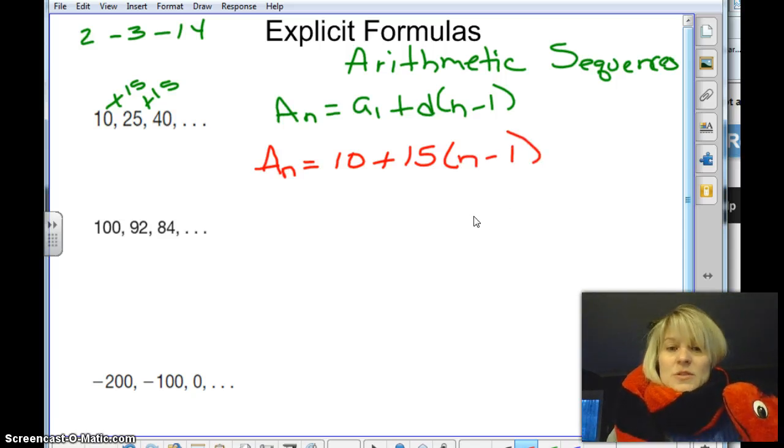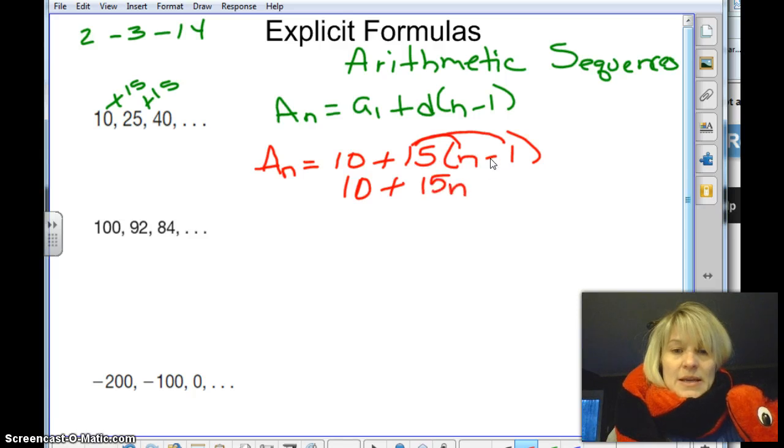And then from here, we just want to simplify. So I have parentheses here, and I can distribute that 15. So that will give me 10 plus 15 times n, which is 15n, minus 15 times 1, which is 15. And then looking here, I have two common terms. I have a 10, and then make sure you put that minus in front of that, that's negative 15. So that becomes 10 minus 15, which we know is negative 5.